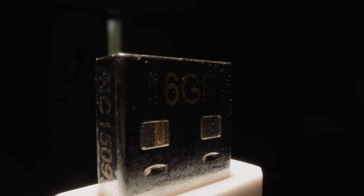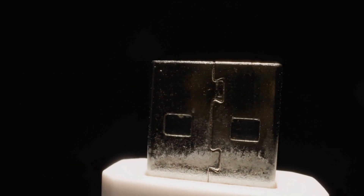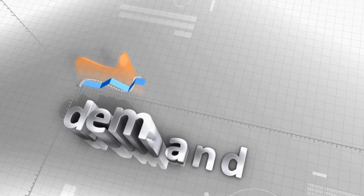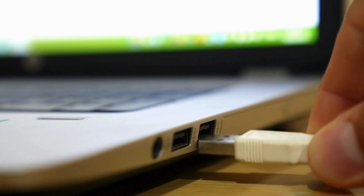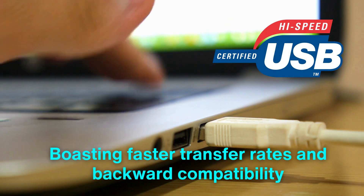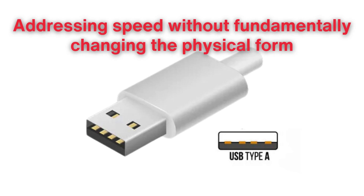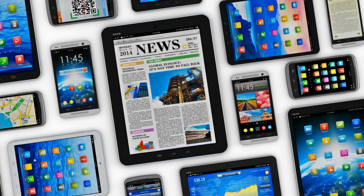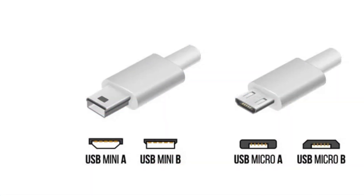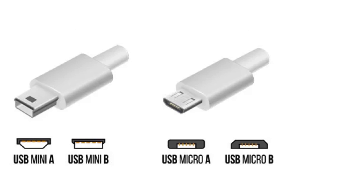Initially, USB seemed like a marvel of simplicity. The rectangular USB Type A connector became a fixture on computers, powering peripherals like mice, keyboards and printers. But as the demands for data transfer and power delivery increased, limitations in speed and efficiency emerged. Enter USB 2.0 in 2000, boasting faster transfer rates and backward compatibility — still retaining the same Type A connector. However, as mobile devices gained prominence, the bulky Type A was ill-suited for compact gadgets, ushering in the era of new connector types, including the smaller USB Mini and Micro variants.